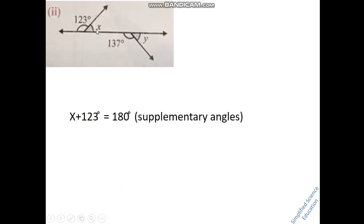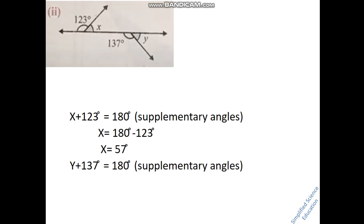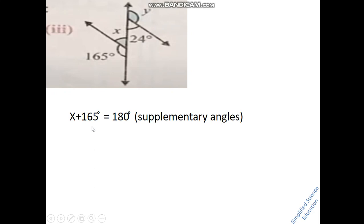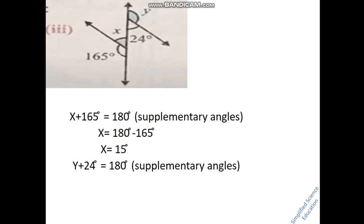For part 2, you will find x and y similarly. One angle is 128 degrees on one side, giving y equals 57 degrees. Then for part 3, you have a straight line equal to 180 degrees. Set up the equation: x plus some angles equals 180 degrees. Subtract 165 from 180 to get x equals 15 degrees, and then subtract 24 to get y equals 56 degrees.